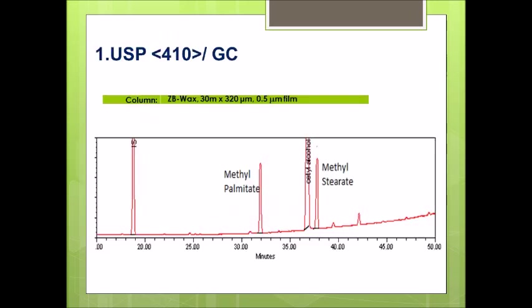This is the example chromatogram of methyl palmitate and methyl stearate that I generated using the ZB-WAX. It is very similar to the column described in the USP, but probably the dimension is not the same.